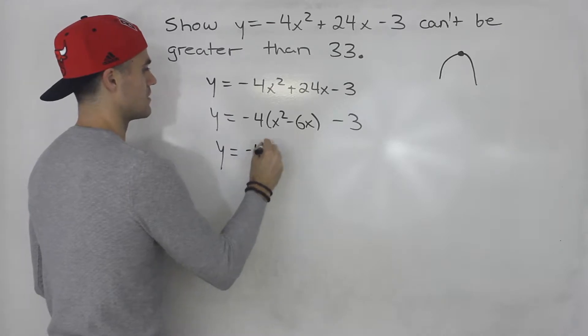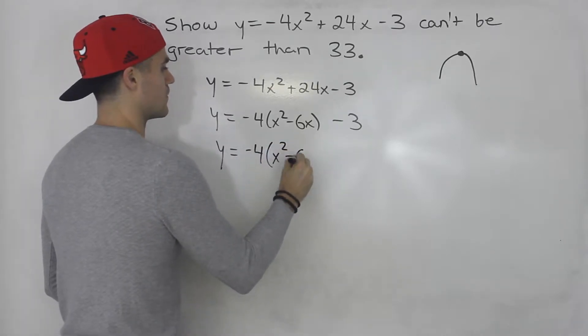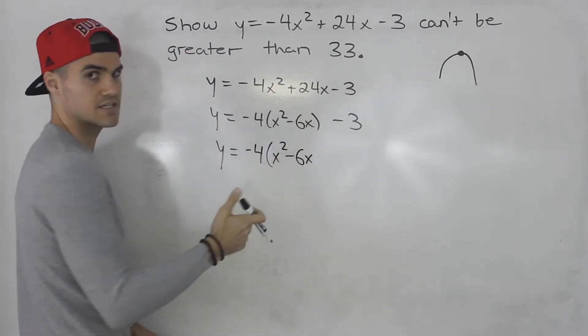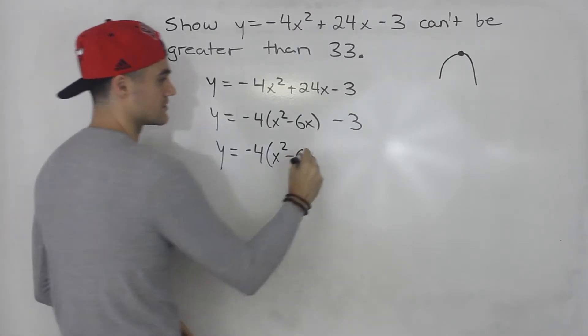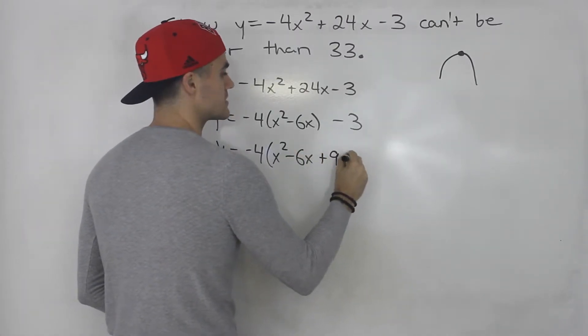From here, we take half of -6, which is -3, and square it, which is 9. So we'd have plus 9 minus 9.